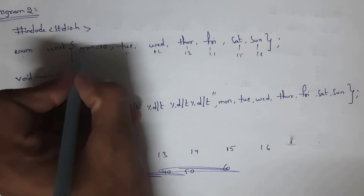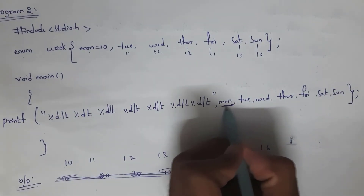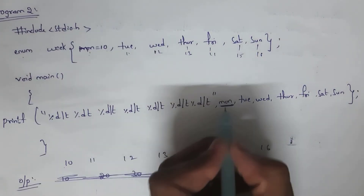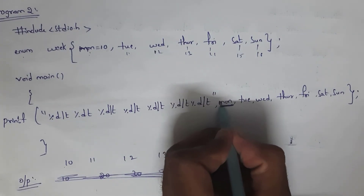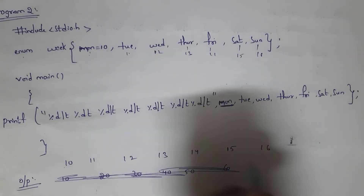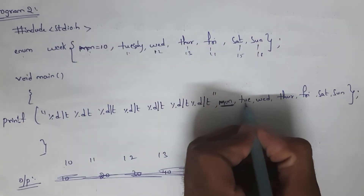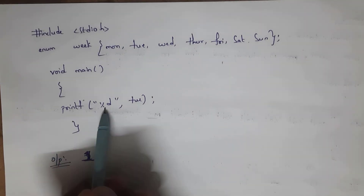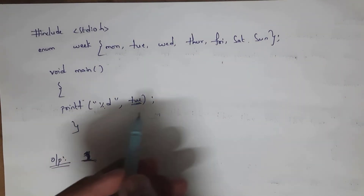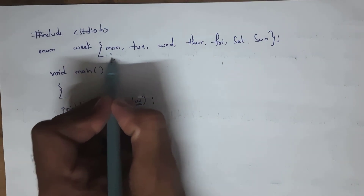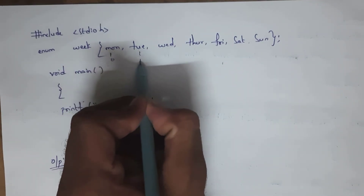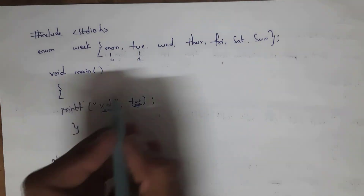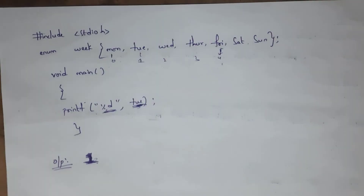Whatever names you use inside the enumeration, you must use the same names inside printf. For example, if you use a capital 'M' in the enum definition, you must use capital 'M' in printf — otherwise you will get an error. In a simple example, writing printf with %d and 'Tuesday' gives output 1, because by default Tuesday is the second name starting from 0. If you write 'Friday' instead, you will get output 4.